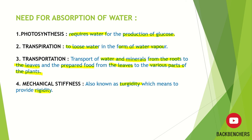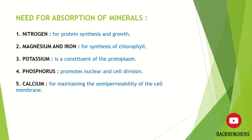Now the need for absorption of minerals — this is a very important portion as many questions come from here. Nitrogen is essential for protein synthesis and growth of the plant. Magnesium and iron are both required for the synthesis of chlorophyll, and since chlorophyll is required for photosynthesis, they indirectly help in photosynthesis. Potassium is a constituent of the protoplasm, which is present in plant cells, making it important for plant cell formation.